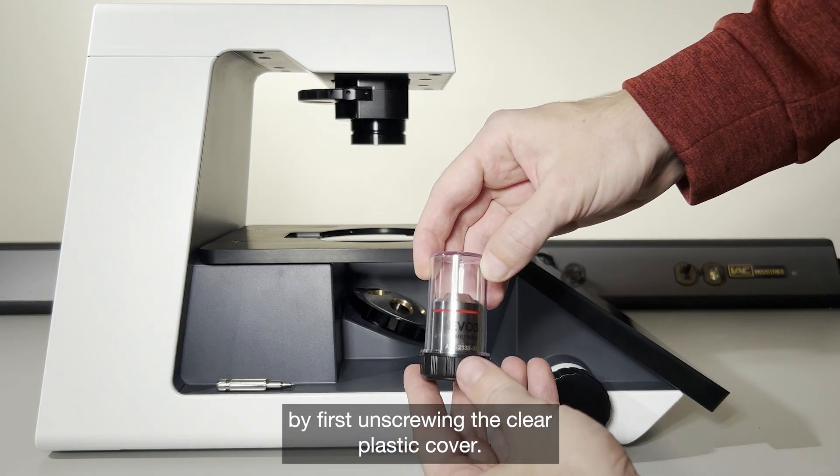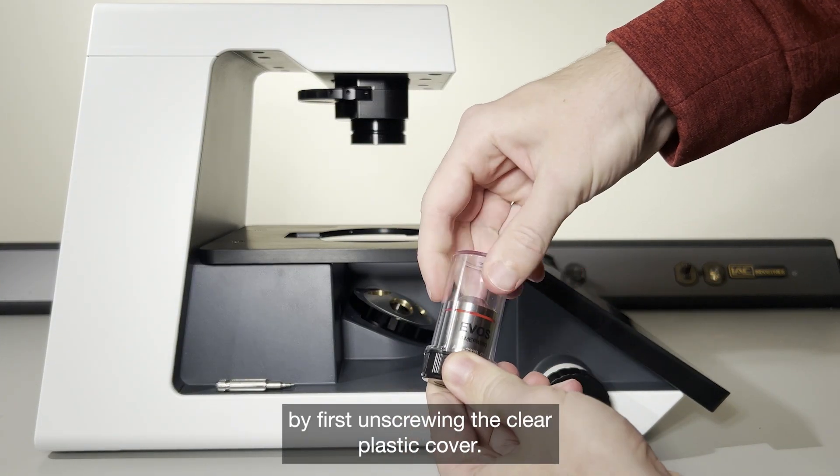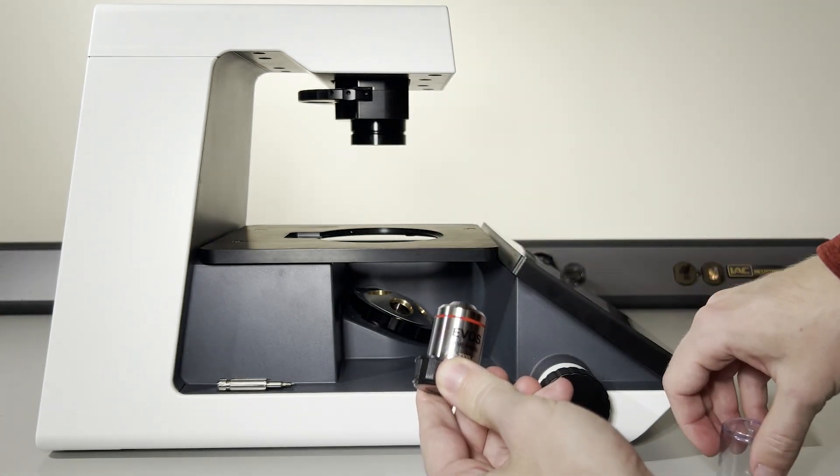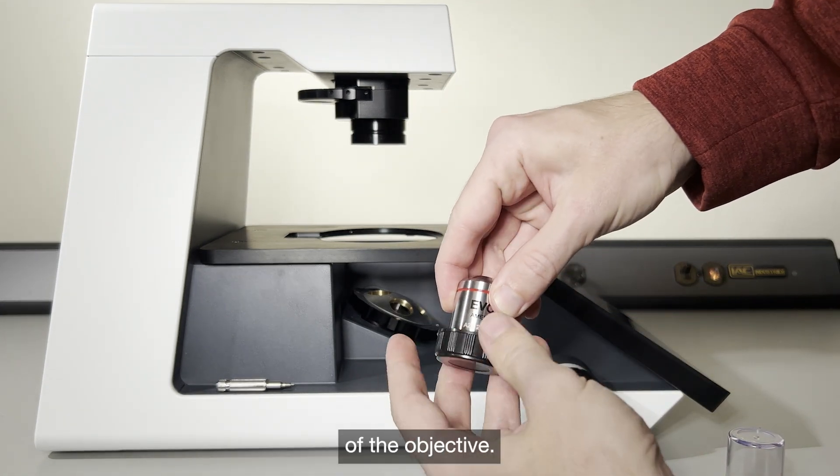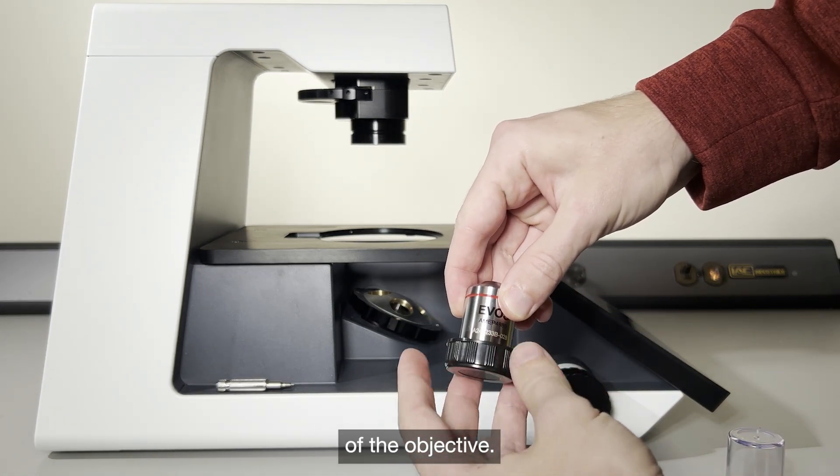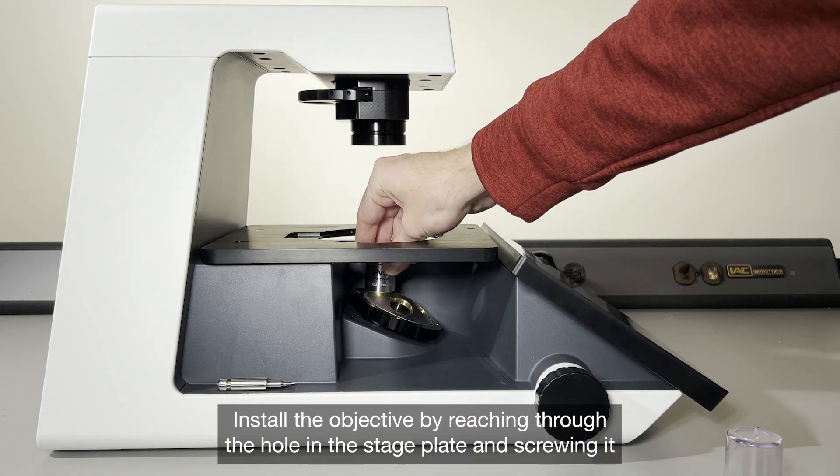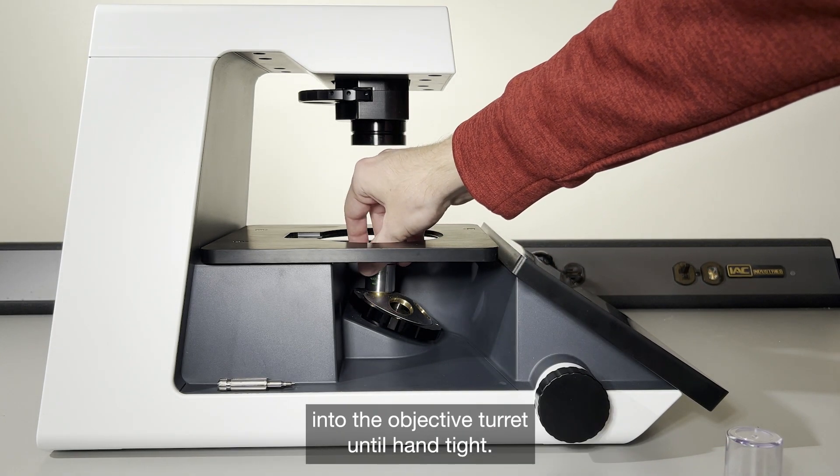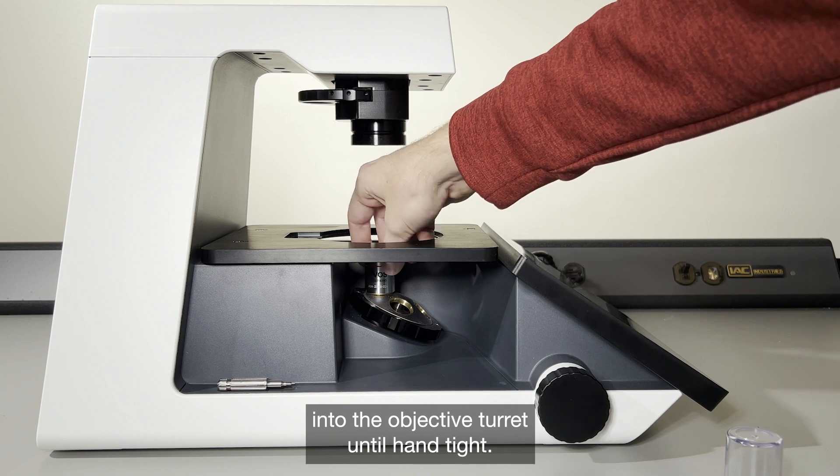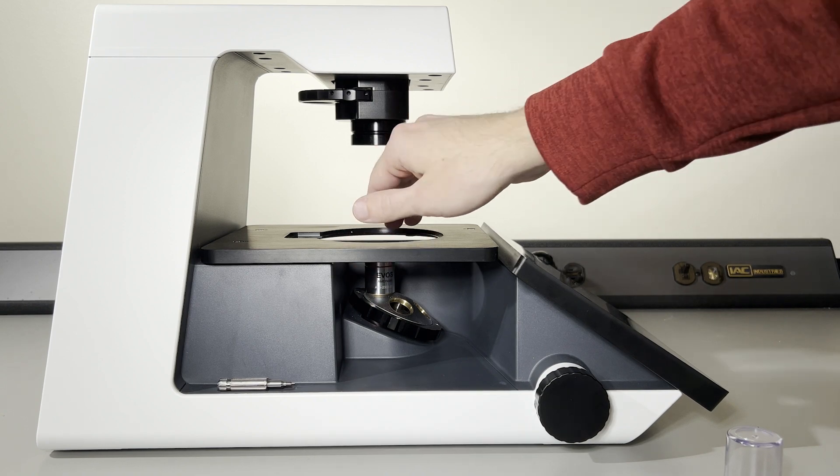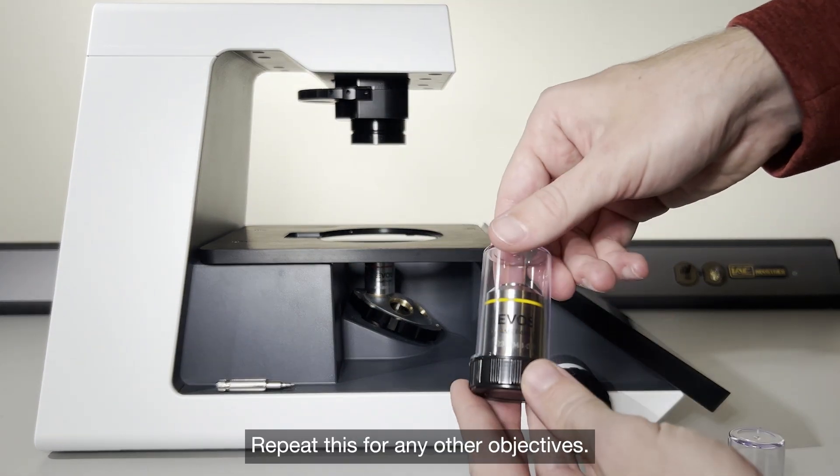Remove an objective from its case by first unscrewing the clear plastic cover, then remove the cap from the bottom of the objective. Install the objective by reaching through the hole in the stage plate and screwing it into the objective turret until hand tight. Repeat this for any other objectives.